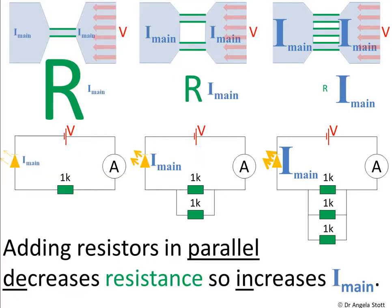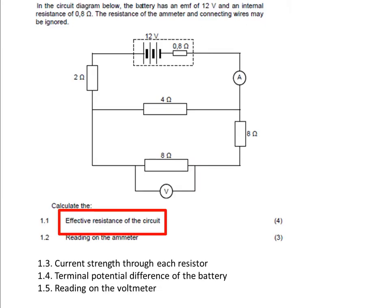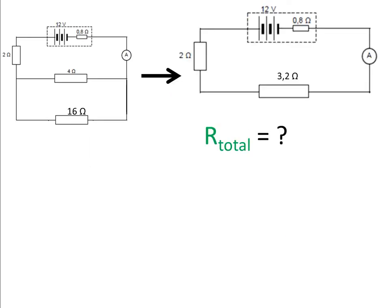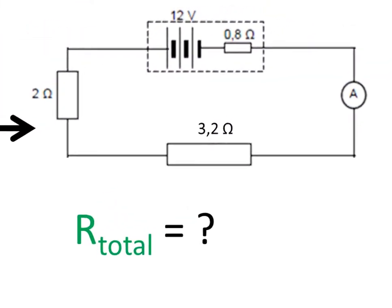That's why the effective resistance of a parallel section must always be less than the lowest value resistance in the parallel section. We notice that the first question asks us to find the effective resistance of the circuit. We've converted the parallel circuit into its equivalent series circuit. Now we need to find the total resistance of the circuit.